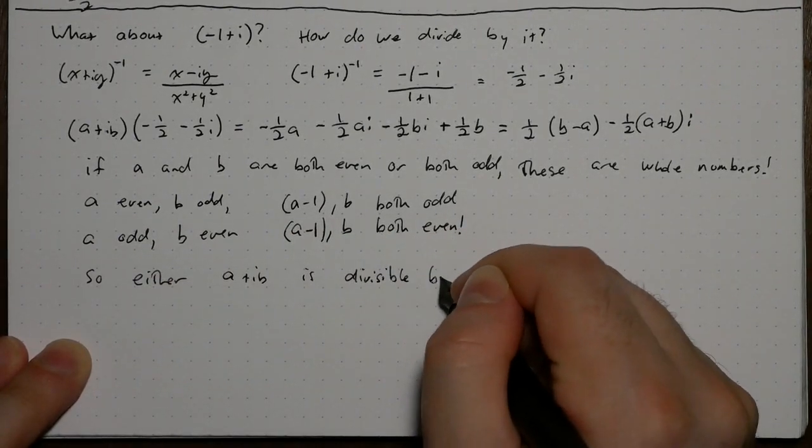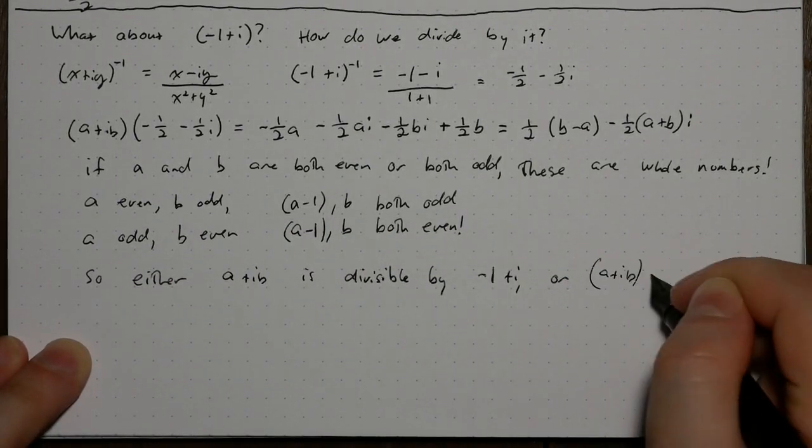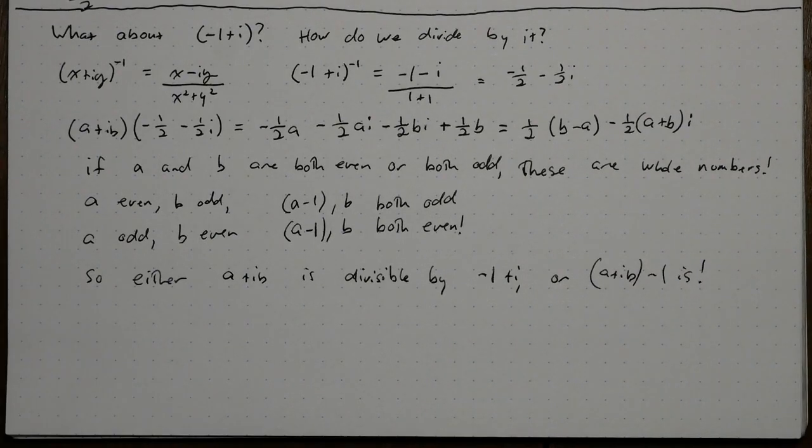So either a plus ib is a multiple of negative 1 plus i, or it's 1 more than a multiple. This is just like 2, but this works for all complex integers.